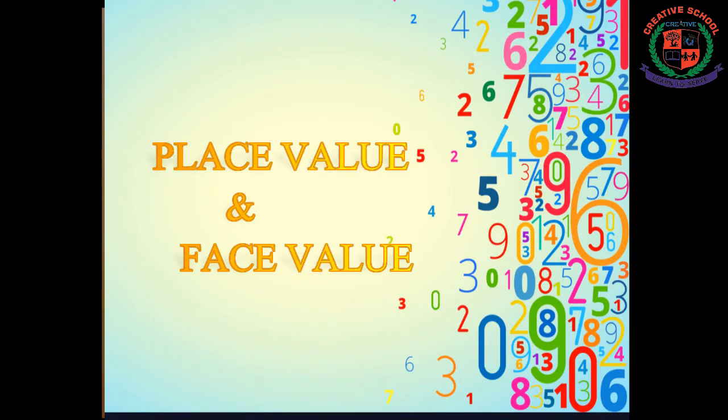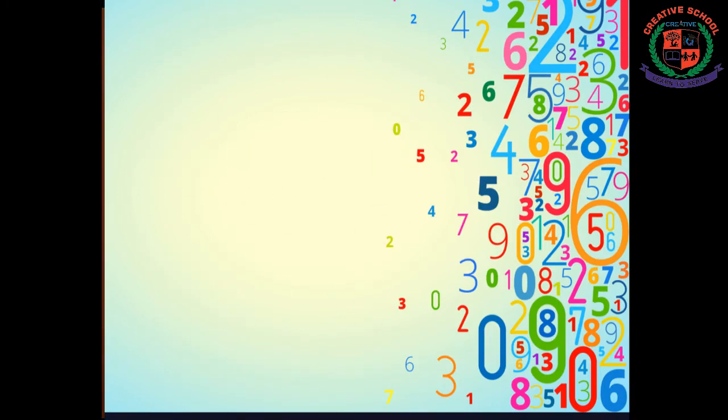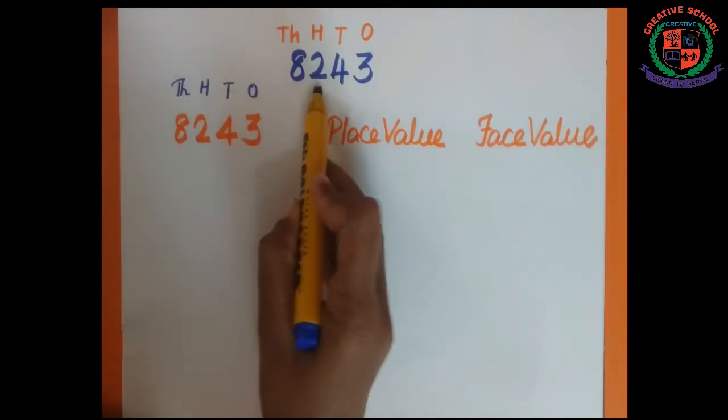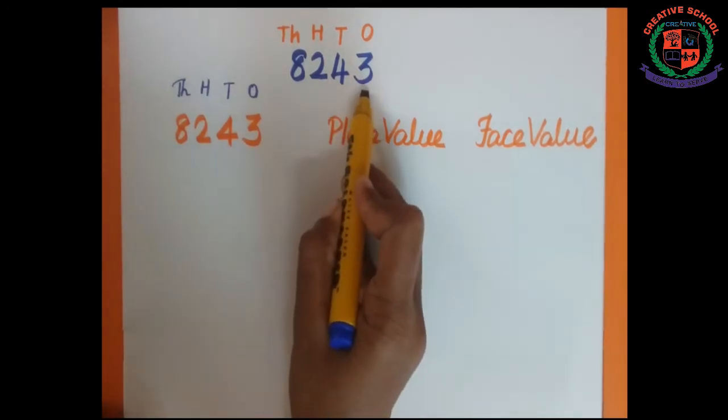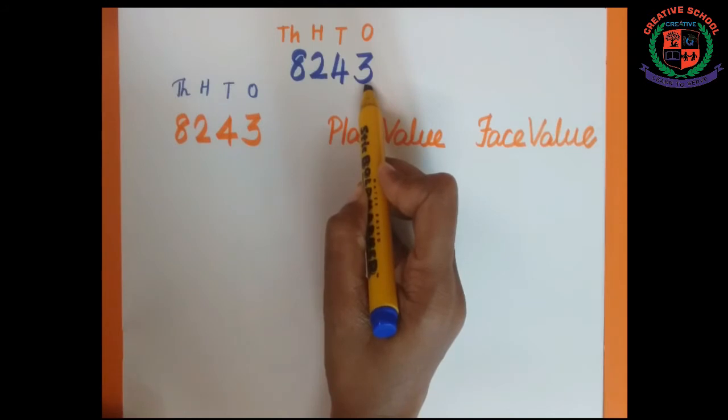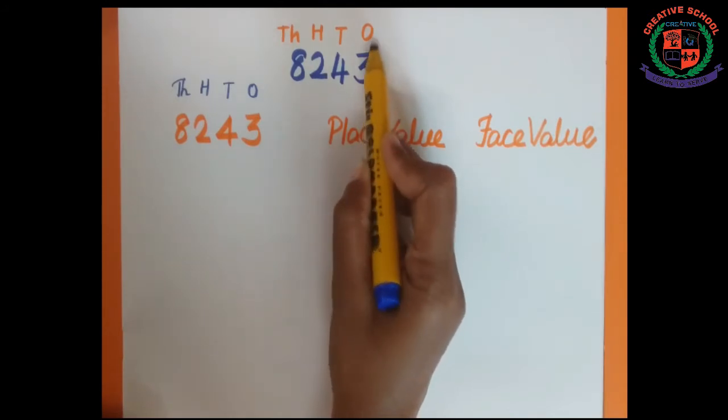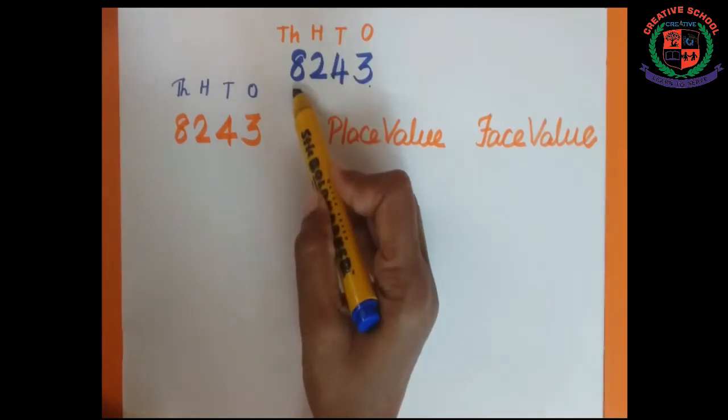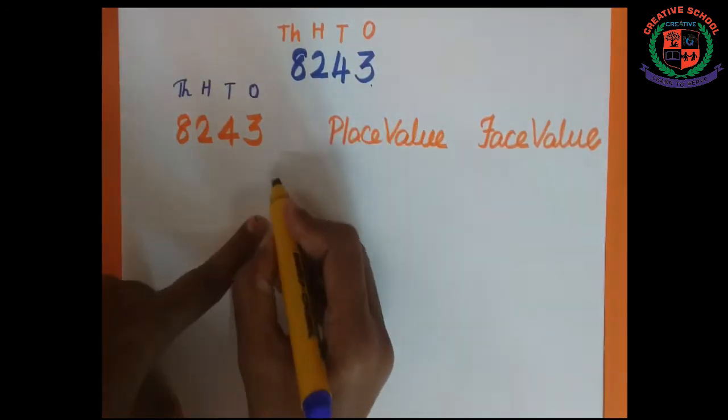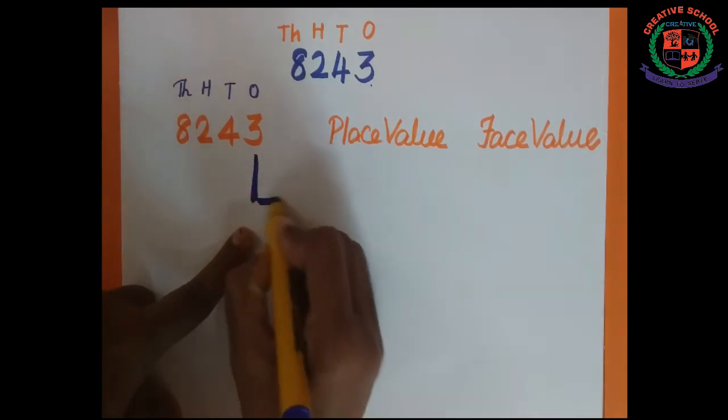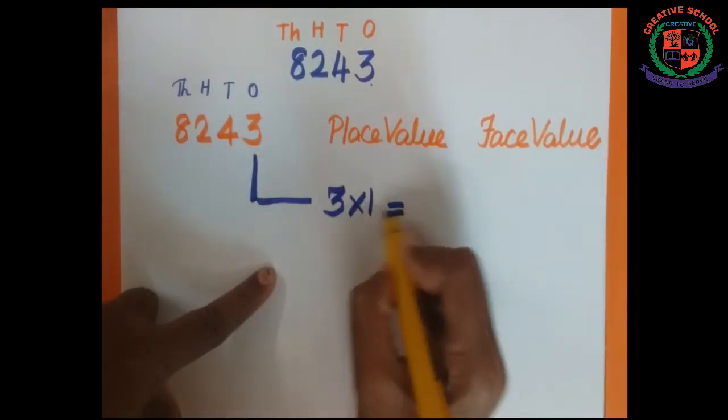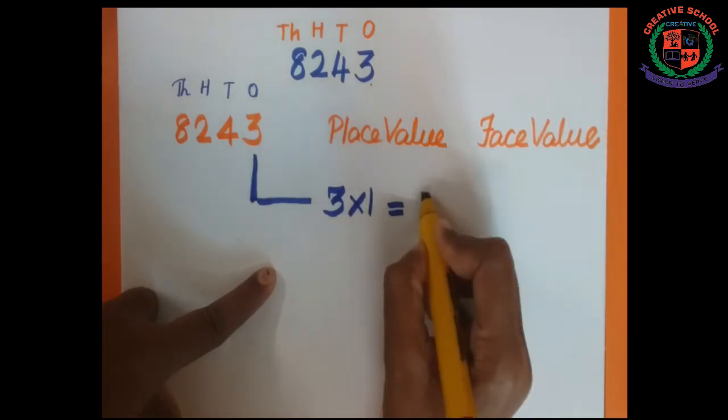We are going to see place value and face value. The given sum is 8243. Its place is: 3 is in ones place, 4 is in tens place, 2 is in hundreds place, 8 is in thousands place. Let us see the sum. 3 multiplied by 1 is equal to 3, so ones are 3.